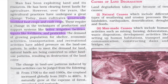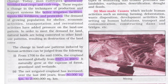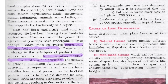As the demand of the growing population for shelter, economic activities, transportation, and recreation increases, pressure on land use patterns also increases. Natural lands are being converted to other land use patterns, resulting in destruction of land cover. From 1700 to the mid-1980s, cropland increased globally from 392% to 466%, growing at the expense of forests, grasslands, and wetlands. Net irrigated cropland increased from 80,000 square kilometers to 20,000,000 square kilometers over 200 years, and worldwide tree cover decreased about 15%.